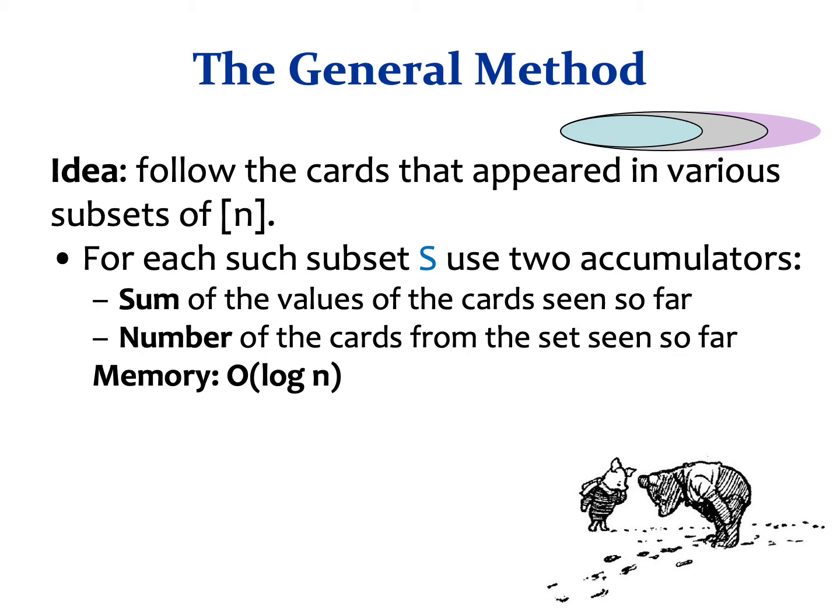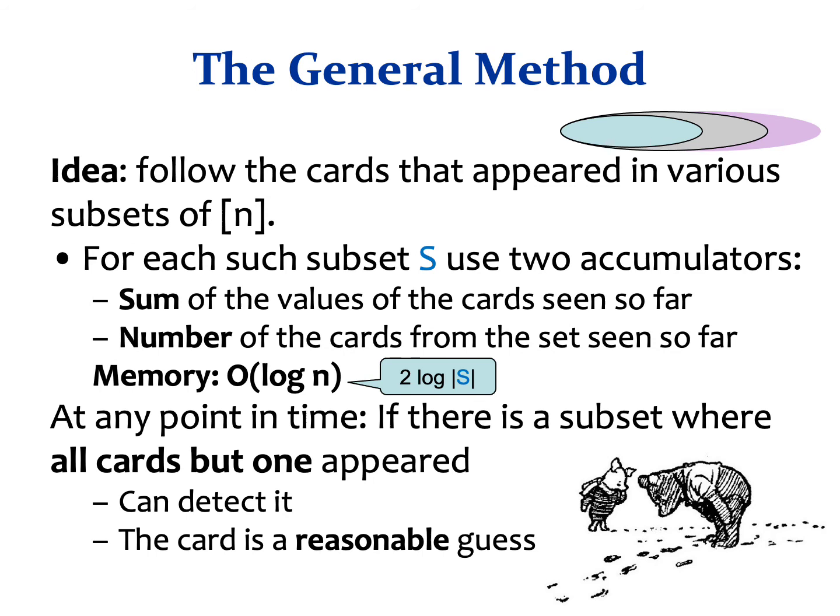The idea is to follow cards that appeared in multiple subsets of n. For each subset, we maintain two accumulators: one is the sum of values of cards seen so far, and two is the number of cards from the subset seen so far. Since there are n cards, each requires only log n bits of memory, and for a set of size s we need 2 log s bits. Whenever there is a subset with a single missing card, we can detect this because we know how many cards appeared and which card is missing — it is explicitly written in memory. Guessing this card is reasonable since it still resides in the deck.